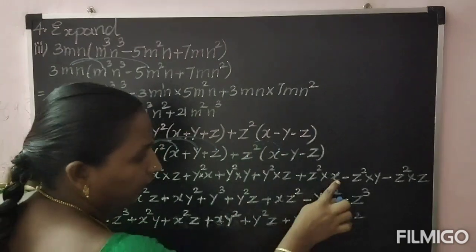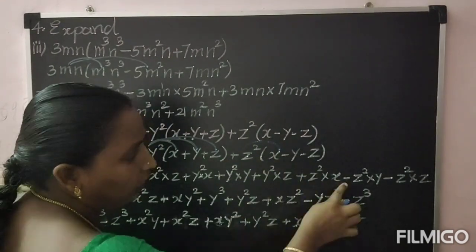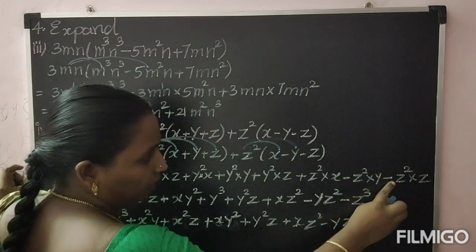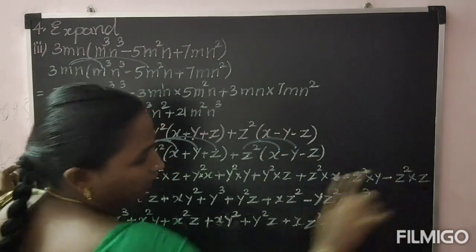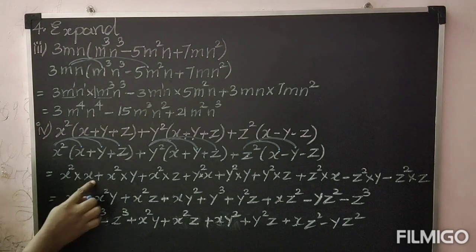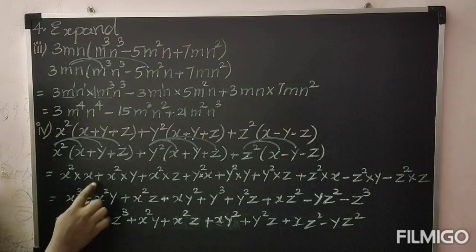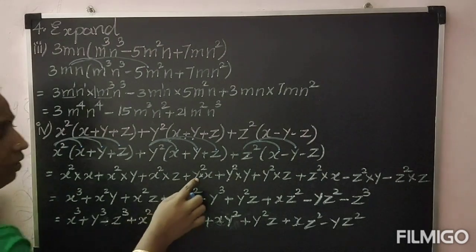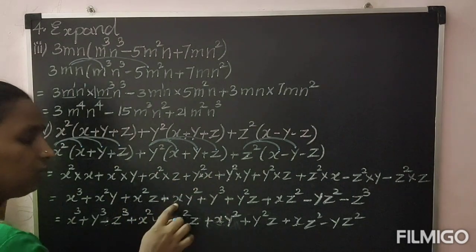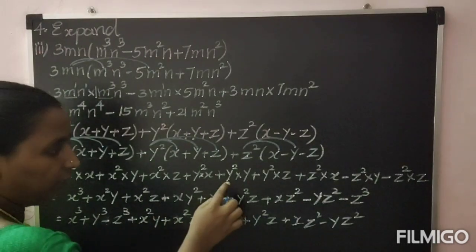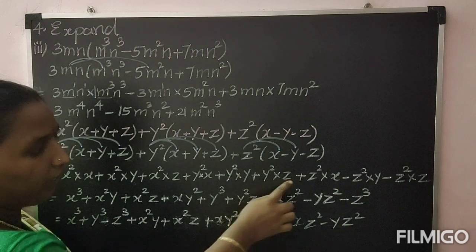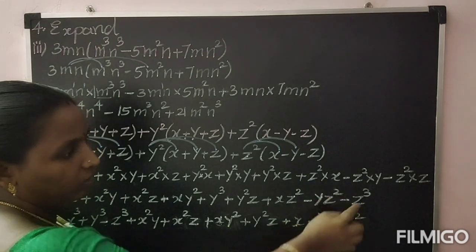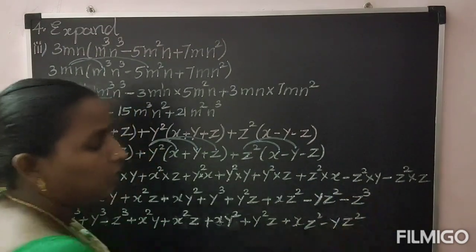Next term: y² into x, y² into y, plus y² into z. Next: z² into x — here now minus — plus into minus gives minus — minus z² into y; here also minus, plus into minus gives minus — minus z² into z.